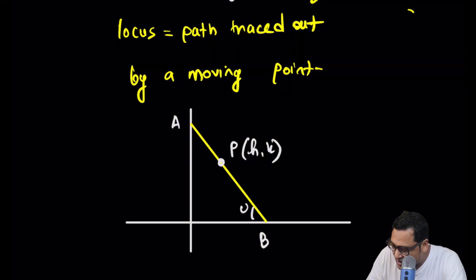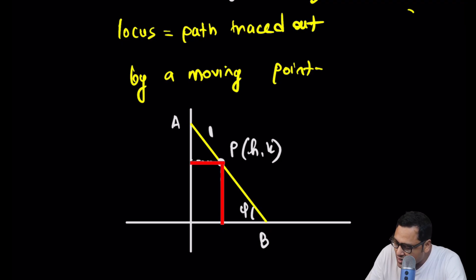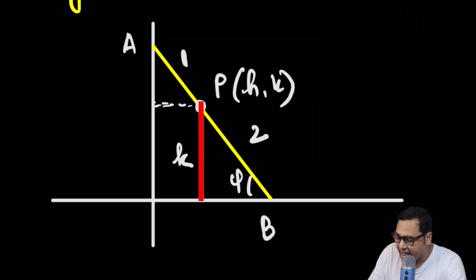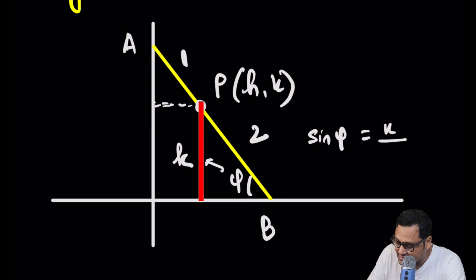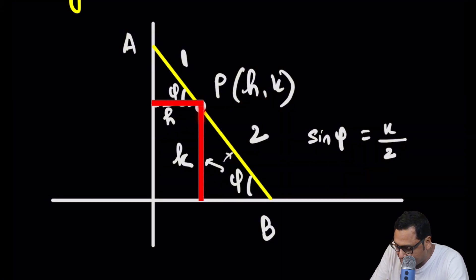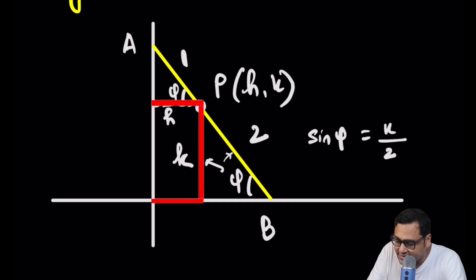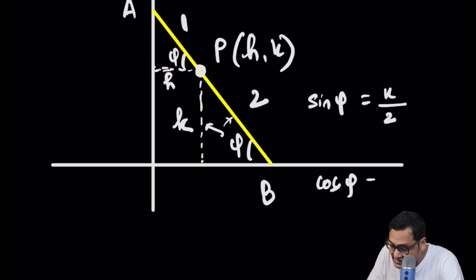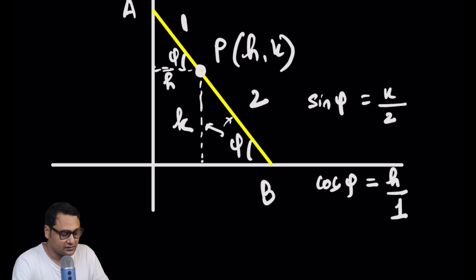Let's suppose this angle is phi. If I drop a perpendicular here, I know that this segment is 1 and this one is 2. This particular height is k. So sine phi equals opposite over hypotenuse, that is k divided by 2 — so sine phi equals k over 2. This angle is also phi. Now, what is cos phi? This horizontal part is h, because h is the x-coordinate. So cos phi equals h over 1.